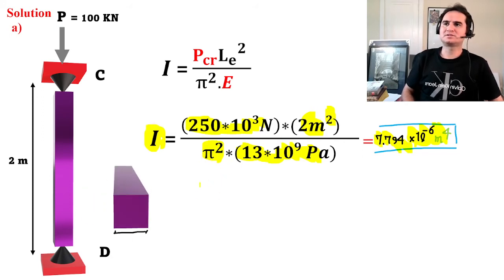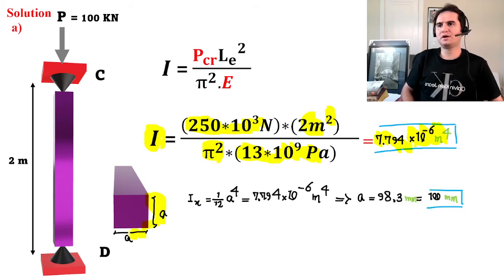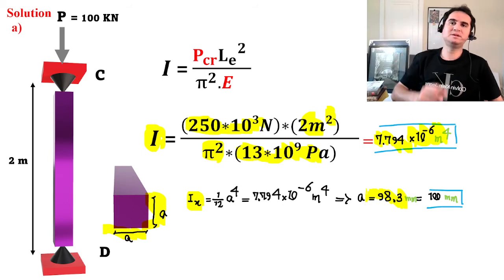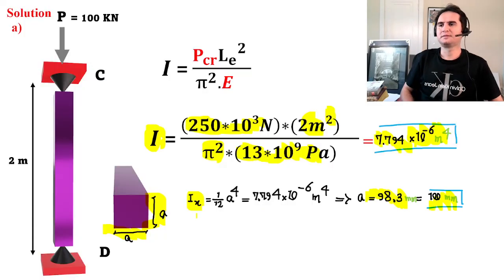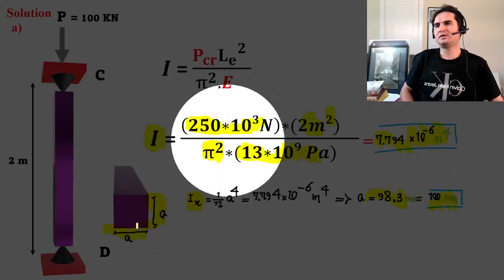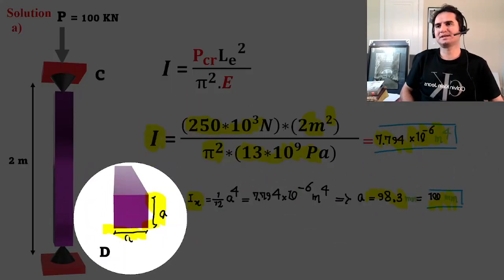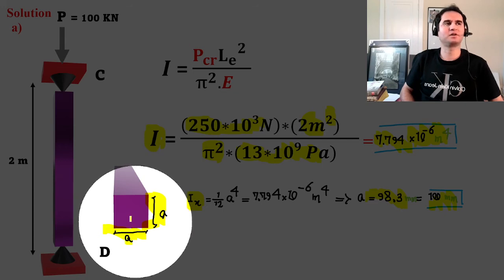As soon as you know what your moment of inertia is, for a square that's a/12 times a to the fourth, and you can get a is equal to 98.83 millimeters. You can consider it as 100 millimeters—that's the area of our square cross-section, 100 millimeters by 100 millimeters.